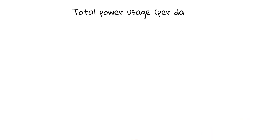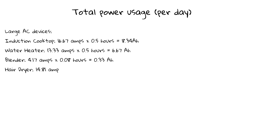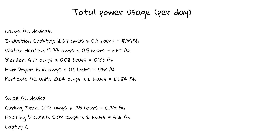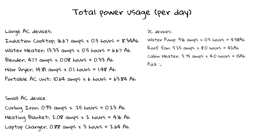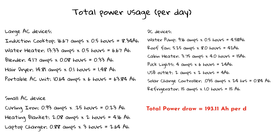So if you remember what we did from our first electrical video, we basically calculated the total power draw of the van per day. We took each device, figured out what its power requirements are, then figured out the amount of time each day that that device would be in service, and we came across with an overall calculation for the day. For us that number was 193.11 amp hours per day, which we figured would be great because we've got 200 amps of battery power.